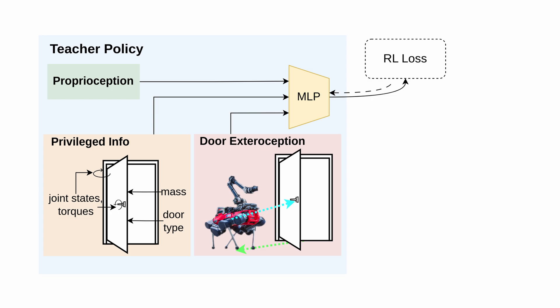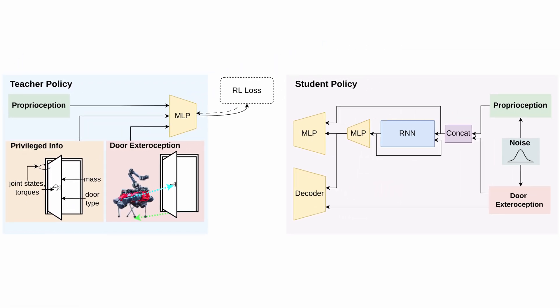The privileged information includes, for example, the opening direction and the door joint states and torques. Next, we train a student policy which only has access to the measurements available on the real robot to both imitate the teacher's actions and estimate the privileged information.